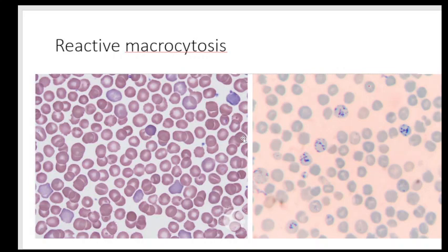Reactive macrocytosis occurs when a person has lost blood: the bone marrow works overtime to produce RBCs to counter the anemia, resulting in immature RBCs entering the bloodstream, giving polychromasia. A special reticulocyte stain will show increased reticulocyte counts. Obvious blood loss, polychromasia, and increased reticulocyte count together suggest reactive macrocytosis.